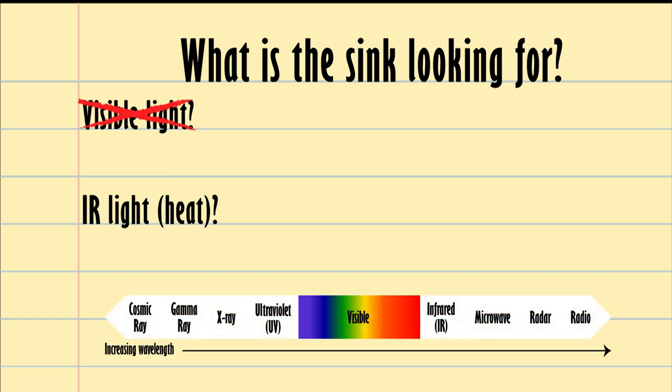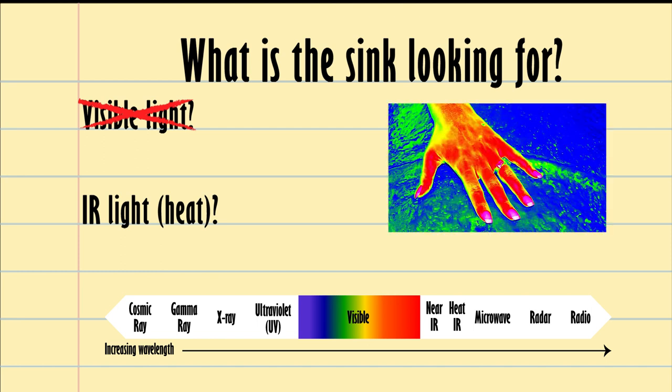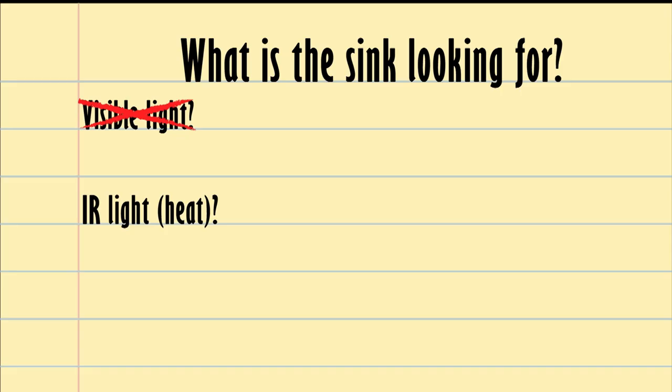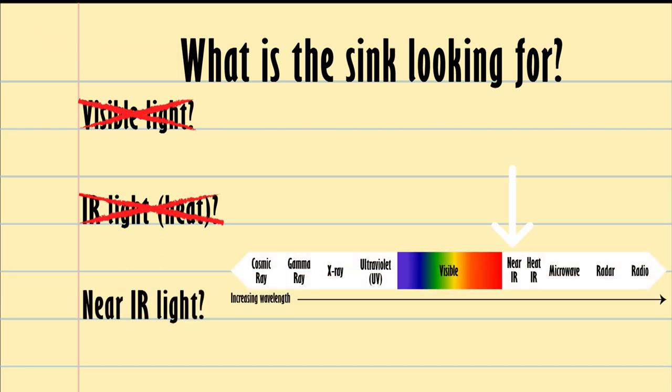Maybe it's looking for a different type of light, such as infrared light. This light exists in two general types: there's heat infrared and near infrared. Heat infrared is what you might think of when you see a thermal image of someone's hand. So when I take something that doesn't give off heat infrared like a notepad and hold it up to the sensor, the sink turns on. That means the sensor probably isn't looking for heat infrared.